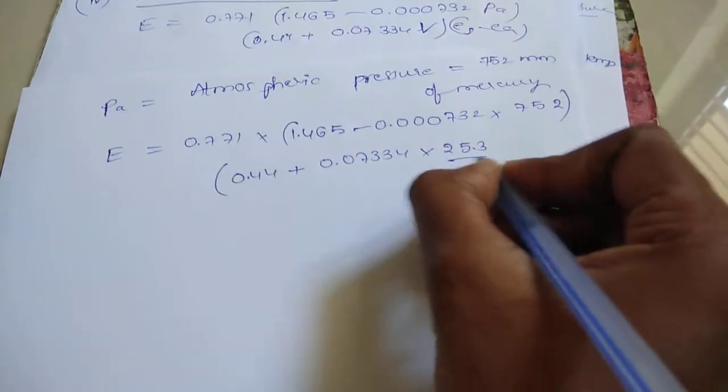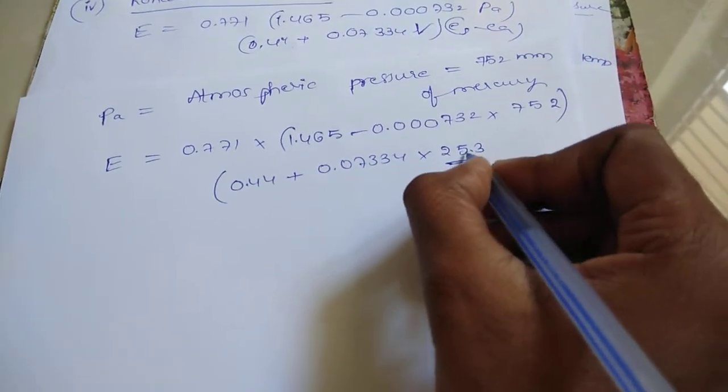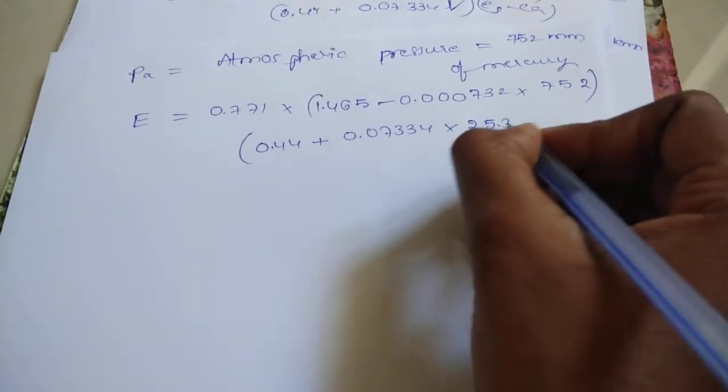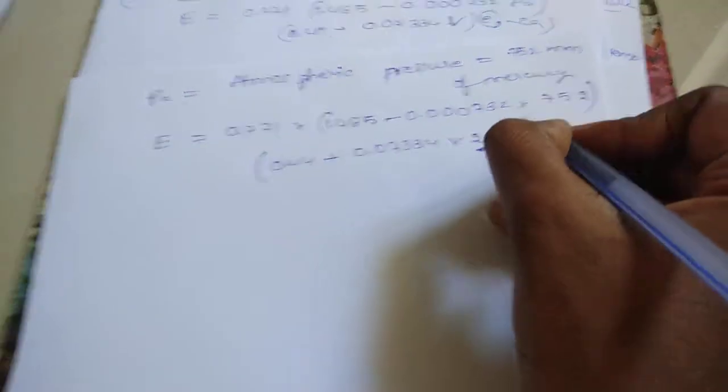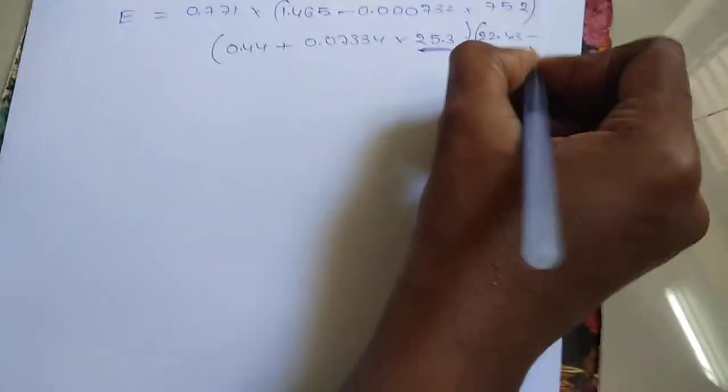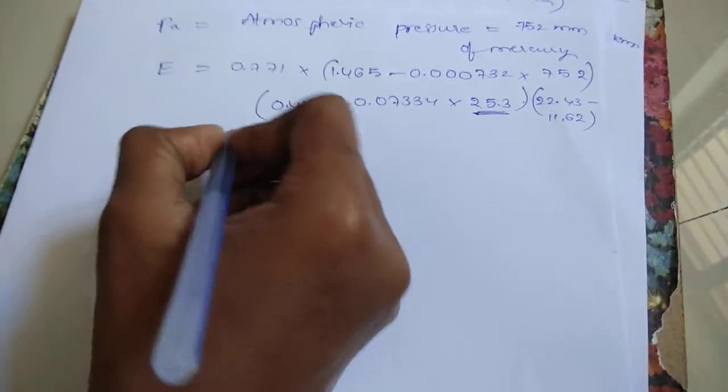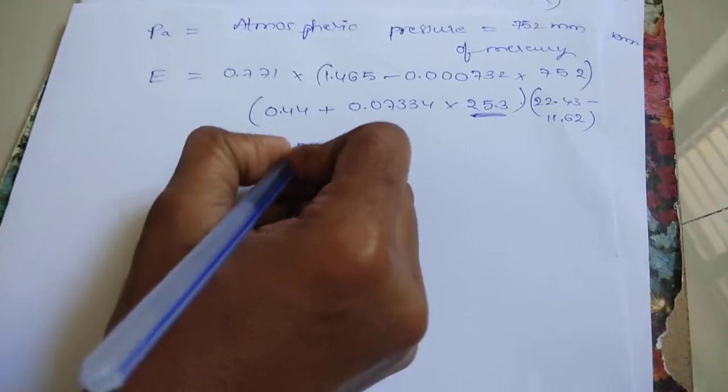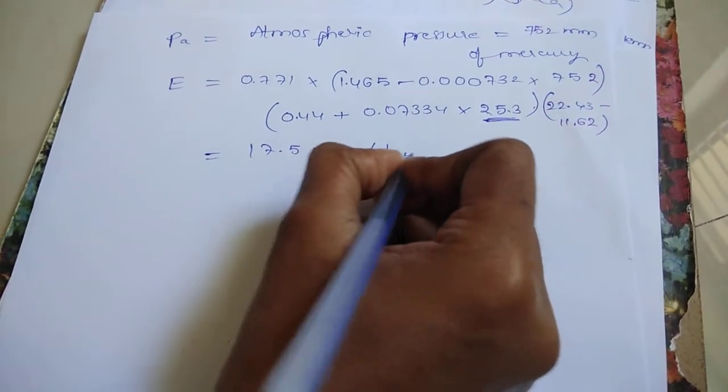So, here wind speed at 0.5 meters above the ground level value capital V is 25.3 into ESL 22.43 minus E 11.62. Substitute the values. You got 17.5 mm per day.